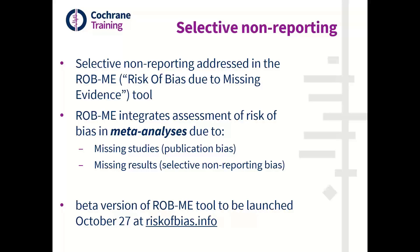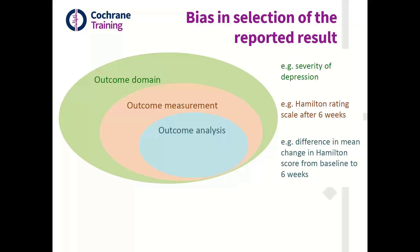We've been developing an alternative tool to capture this issue of selective non-reporting, which we call the ROBME tool — Risk of Bias due to Missing Evidence. It's designed to integrate an assessment of risk of bias in meta-analyses arising from whole studies being missing, classic publication bias, as well as particular results being missing within a study. A beta version of the ROBME tool is being launched on riskofbias.info, with a presentation at the Cochrane Bias Methods Group annual virtual meeting. I'll park that issue for now and turn focus to what the ROB2 tool asks us to look at.